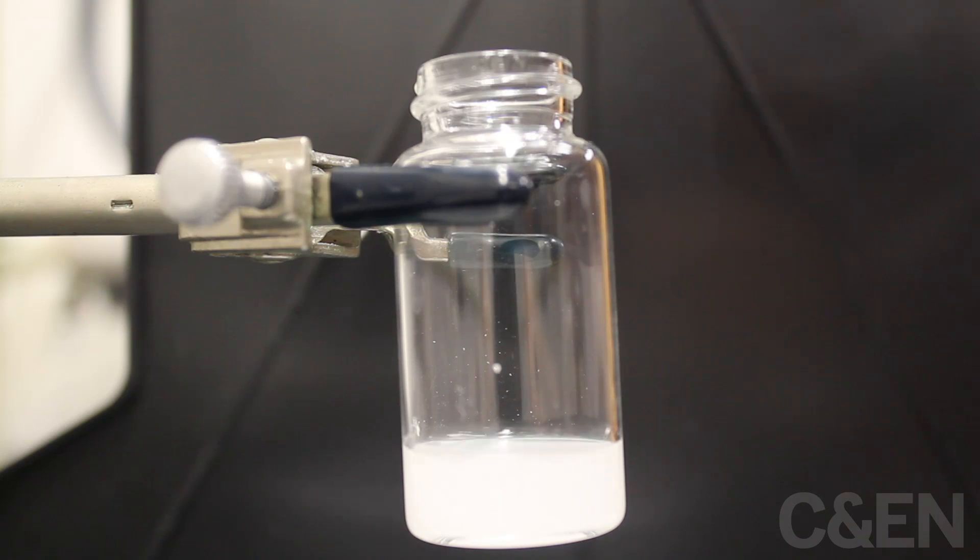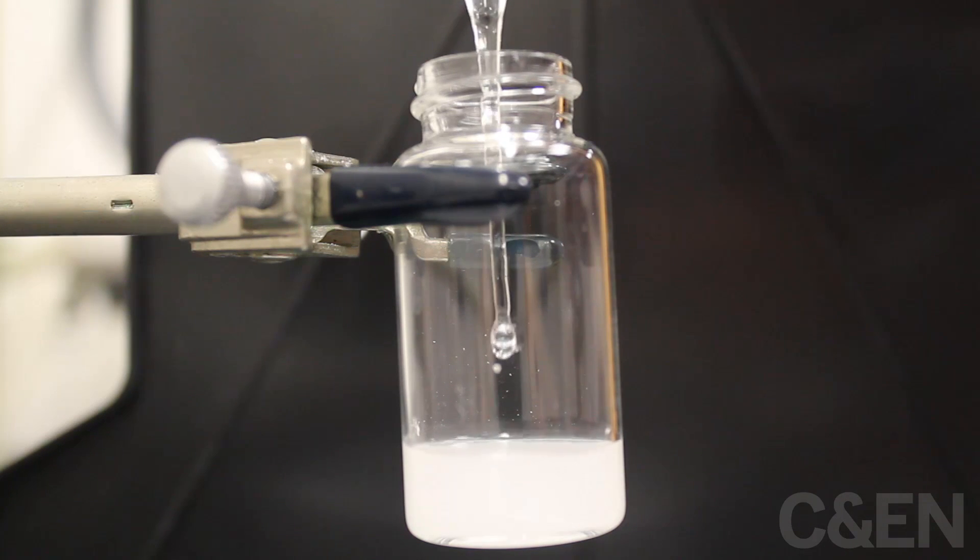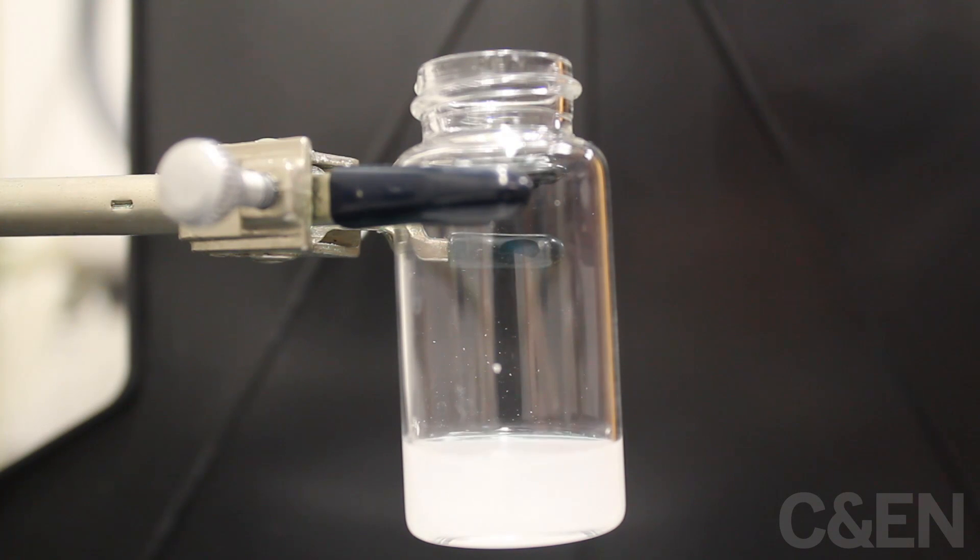Next we'll add diethanolamine by pipette, and what you'll see is the solid will go into solution and then it'll come out as a precipitate, and that's the DABO boronate.